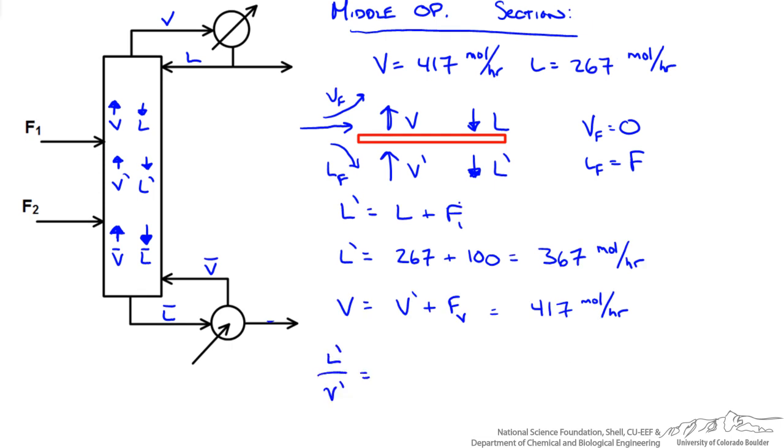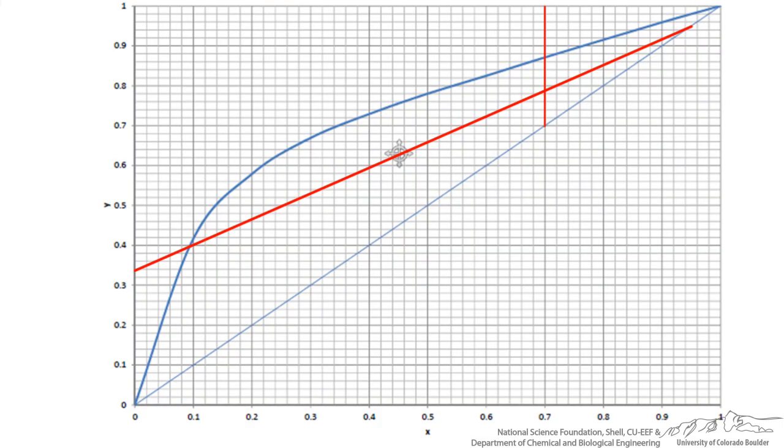This also means we can calculate what the slope of our operating line in the middle is going to be as L prime over V prime and I get a value of 0.88. We know that our middle operating line has to intersect our top operating line at the feed. So we could determine what the intercept is on the y axis using our slope.